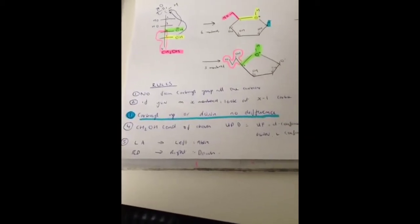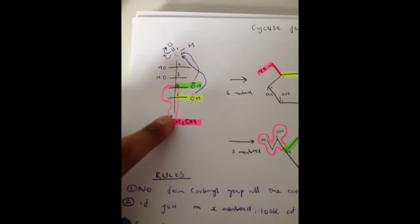The second one is that if you want an X membered ring, so 5 or 6, or you can have 4 but I don't think that's possible, look at the X-1 carbon. So for example I want a 6 membered ring, so it'll have this structure here. What will happen is I'll have to look at the 5th carbon to look at the nucleophile to attack the carbonyl group there as you can see.